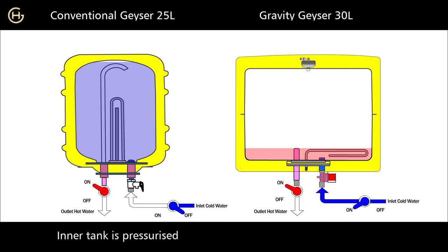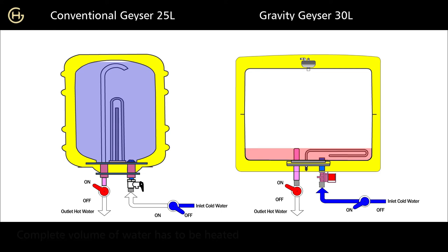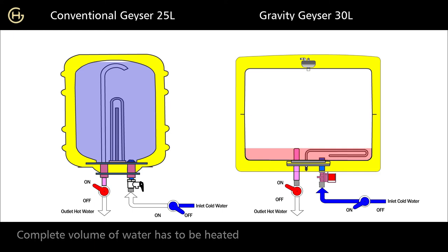In a conventional storage geyser, the tank is pressurized and there is a chance of explosion, whereas in our gravity geyser this problem is eliminated due to normalized pressure. Irrespective of usage, in a conventional storage geyser the complete volume of water has to be heated, so the dead storage is the complete volume.